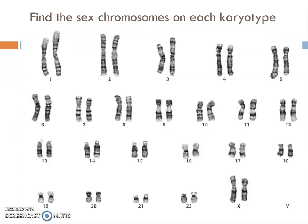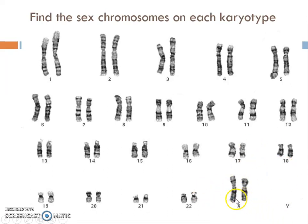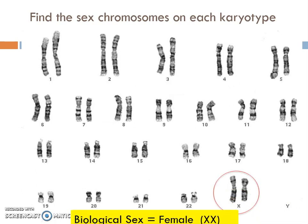Looking at this example: if the question is 'what is the biological sex of this karyotype?', I look through pairs 1 through 22 — a copy from mom and a copy from dad for each — but to find biological sex, I look at the 23rd pair, the X and Y, which are almost always at the bottom right of the karyotype. Here I see two X chromosomes and nothing on Y, so because I have two X's, this is a biological female — XX.